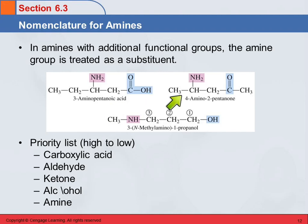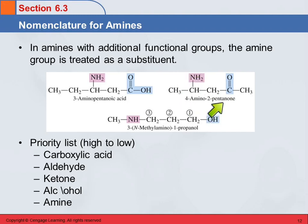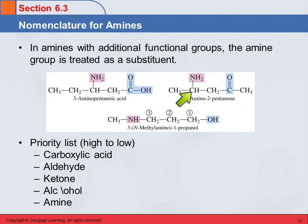Here we have a ketone and an amine group. We name it as the ketone. This is 2-pentanone. Counting 1, 2, 3, 4 — the amino group is on the fourth carbon. So: 4-amino-2-pentanone.